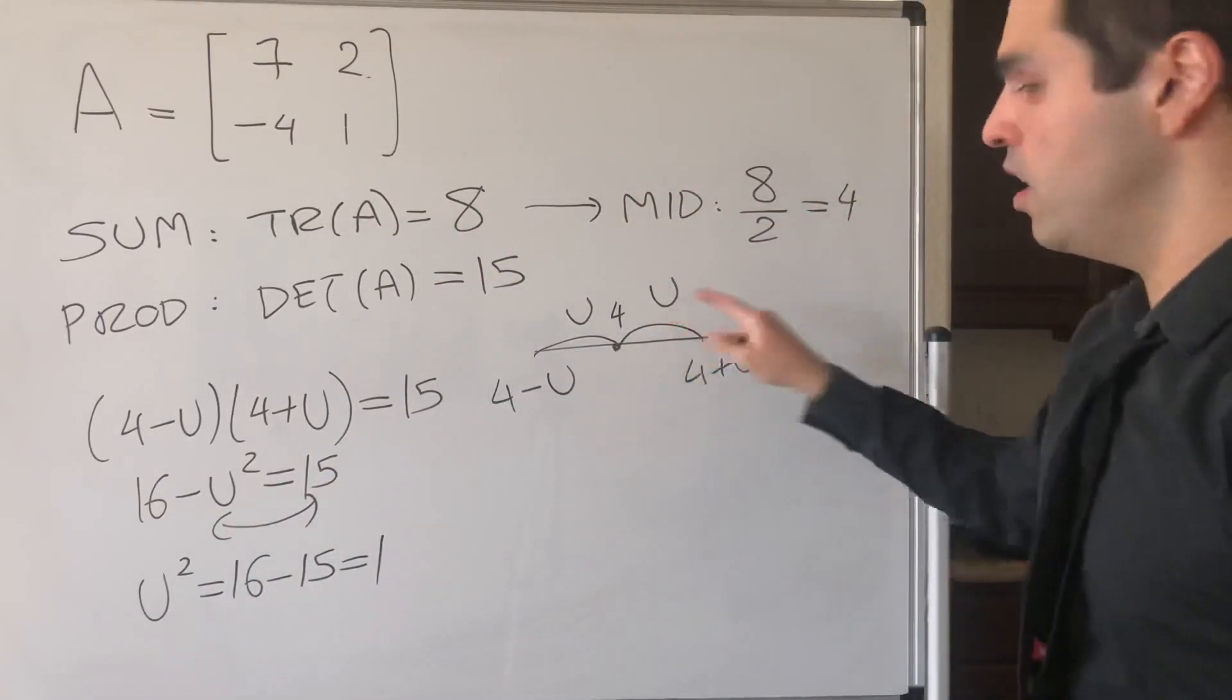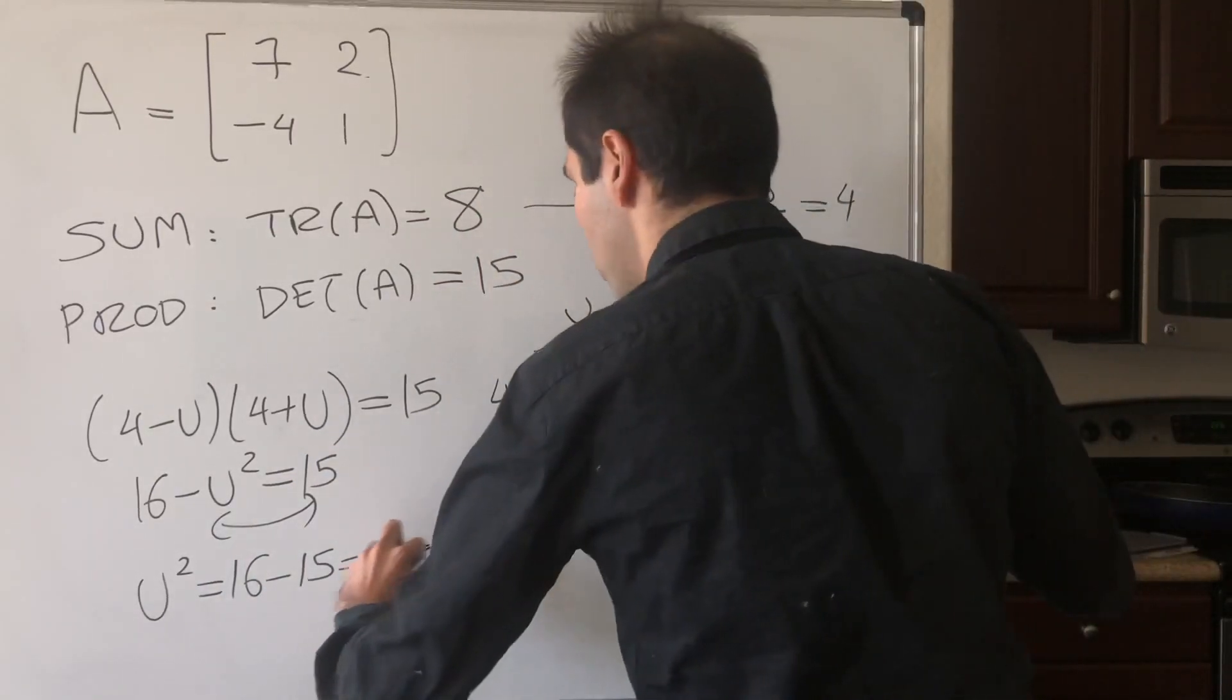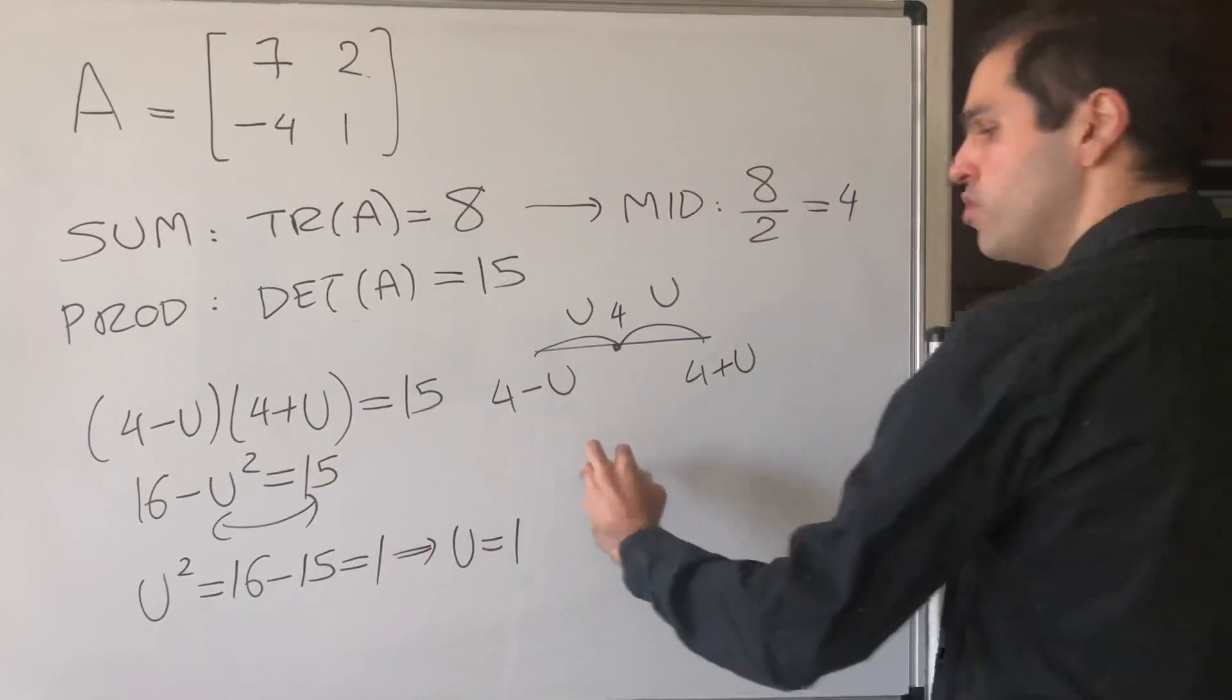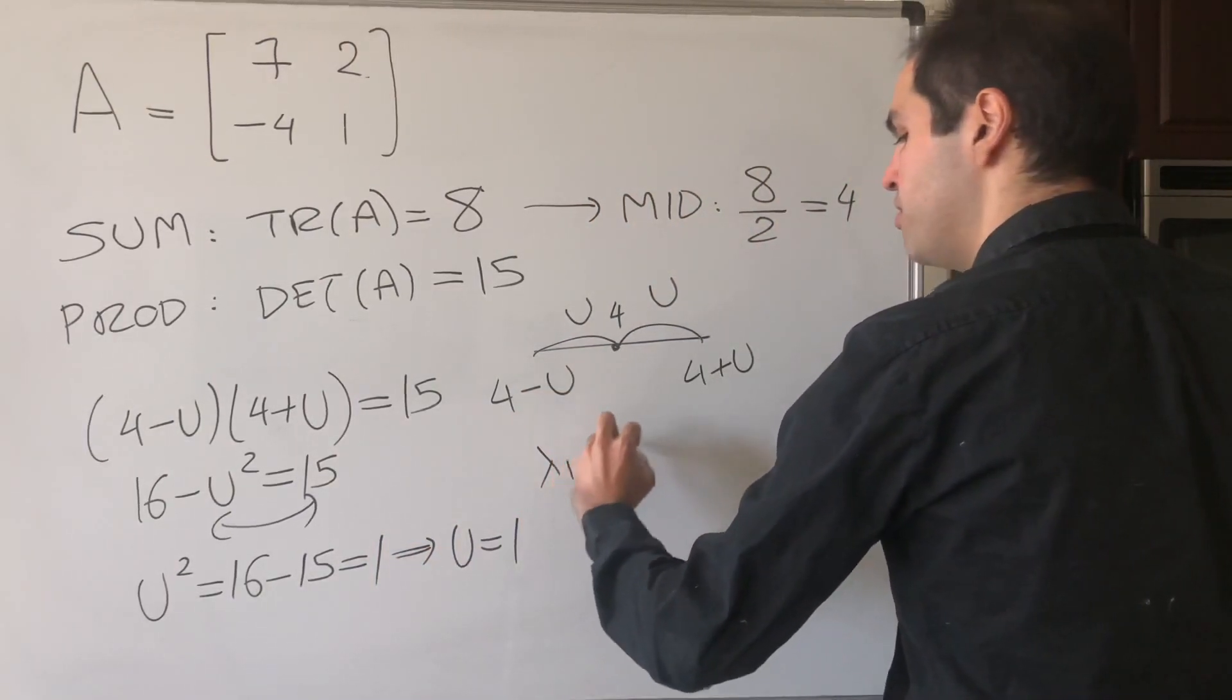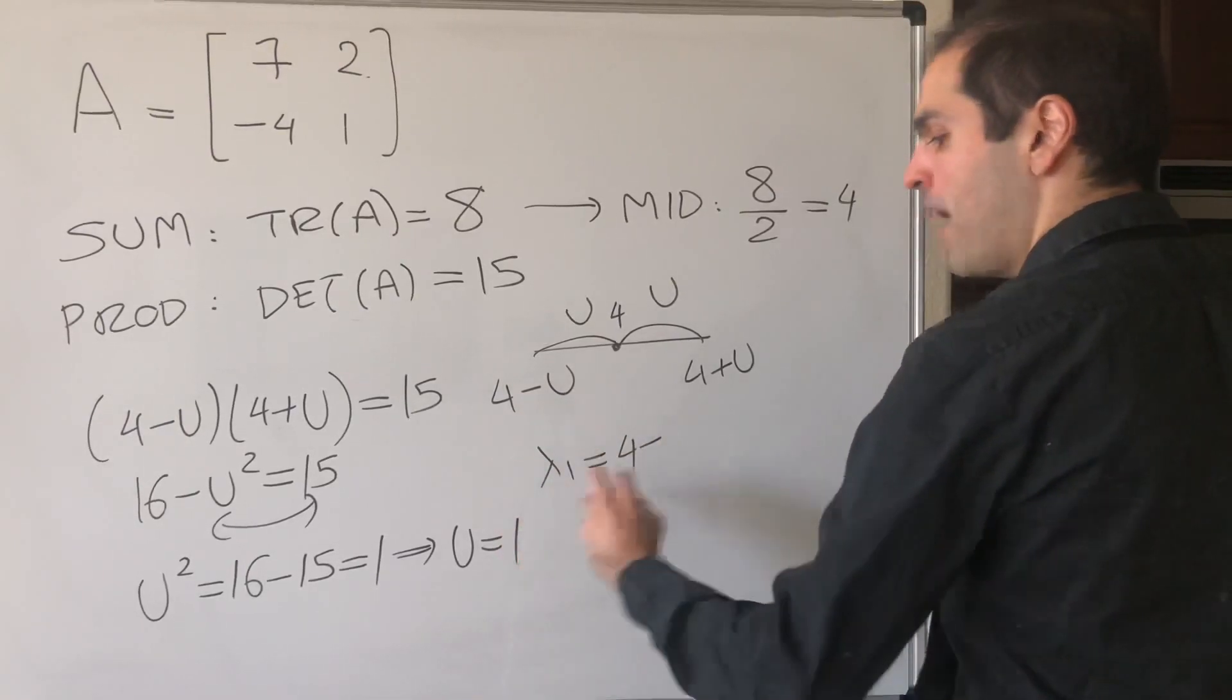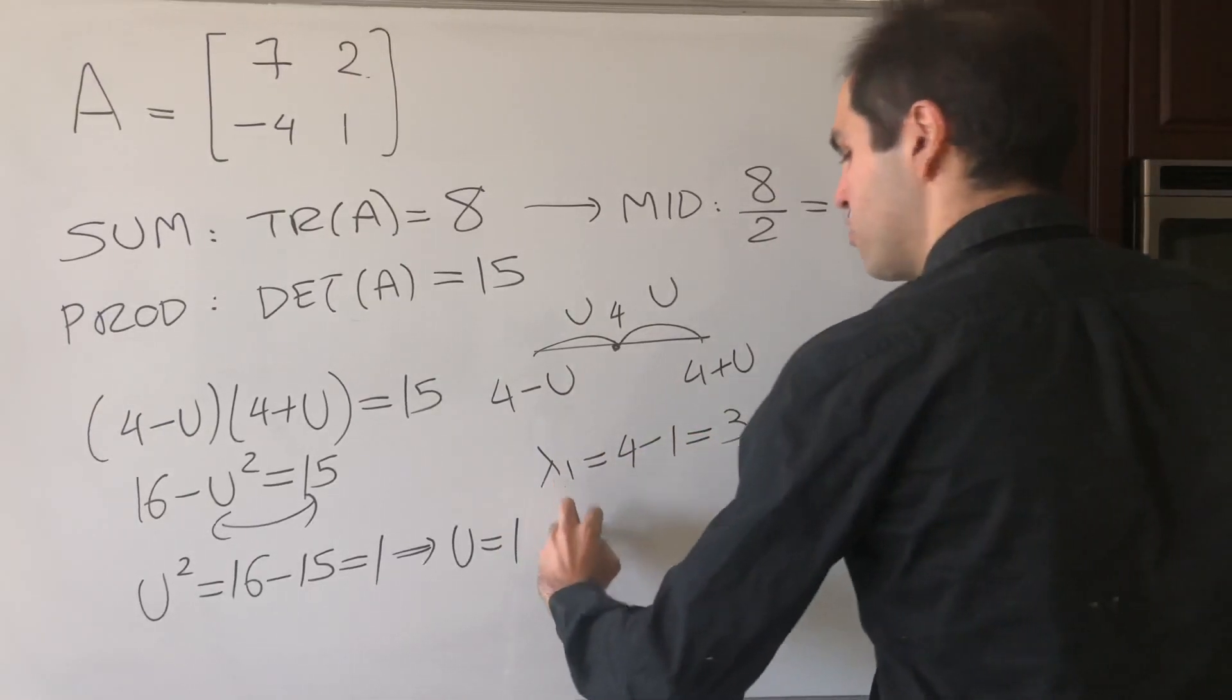So u squared is 1, and since u is a distance, u has to be 1, which tells us that one eigenvalue, let's say lambda 1, is 4 minus u, so 4 minus 1, which is 3.